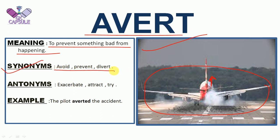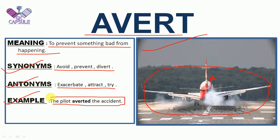Synonyms of AVERT: avoid, prevent, divert. Antonyms: exaggerate, attract, try. Example: the pilot averted an accident, meaning something bad was prevented from happening. So here you can understand the meaning of AVERT.